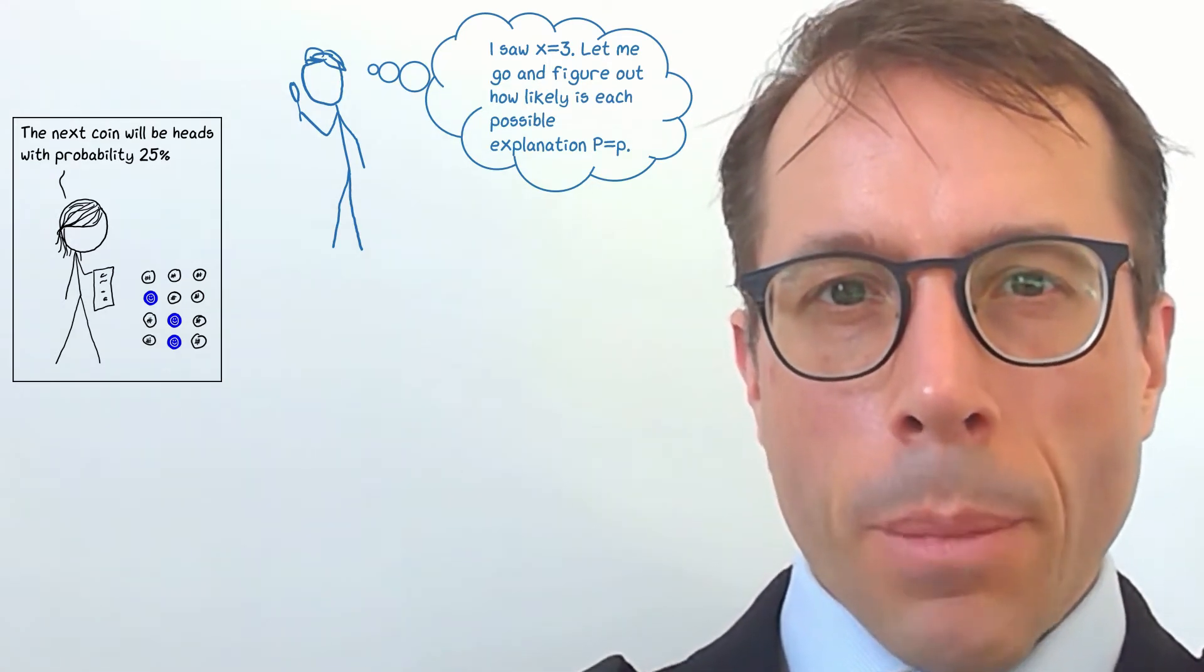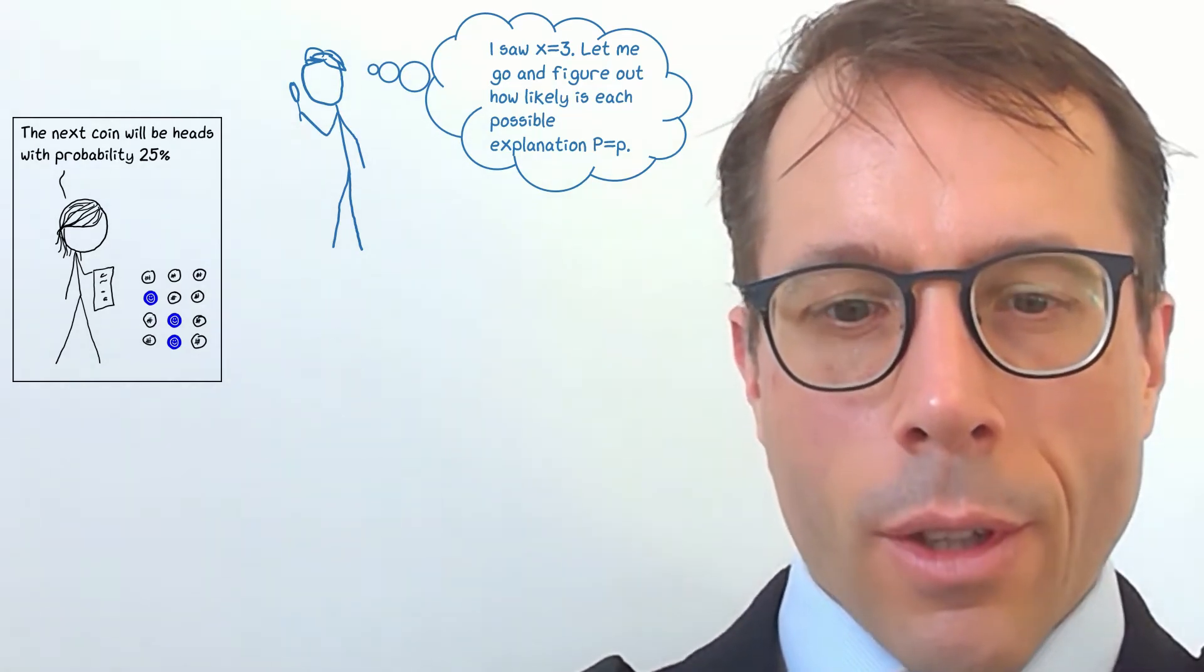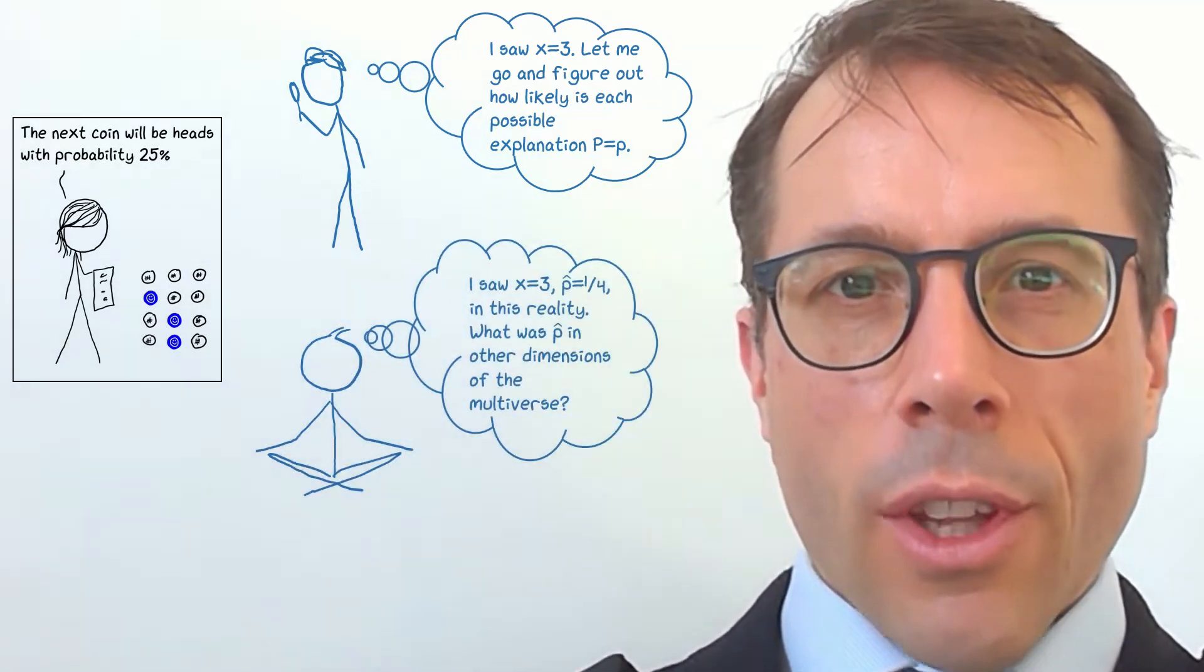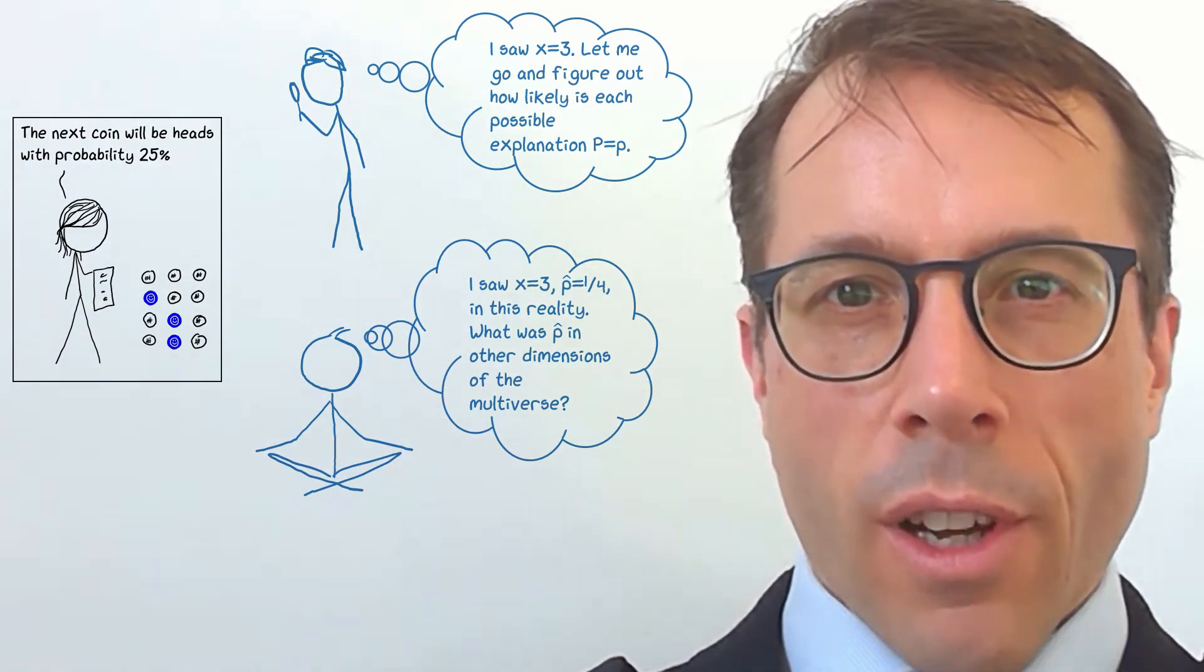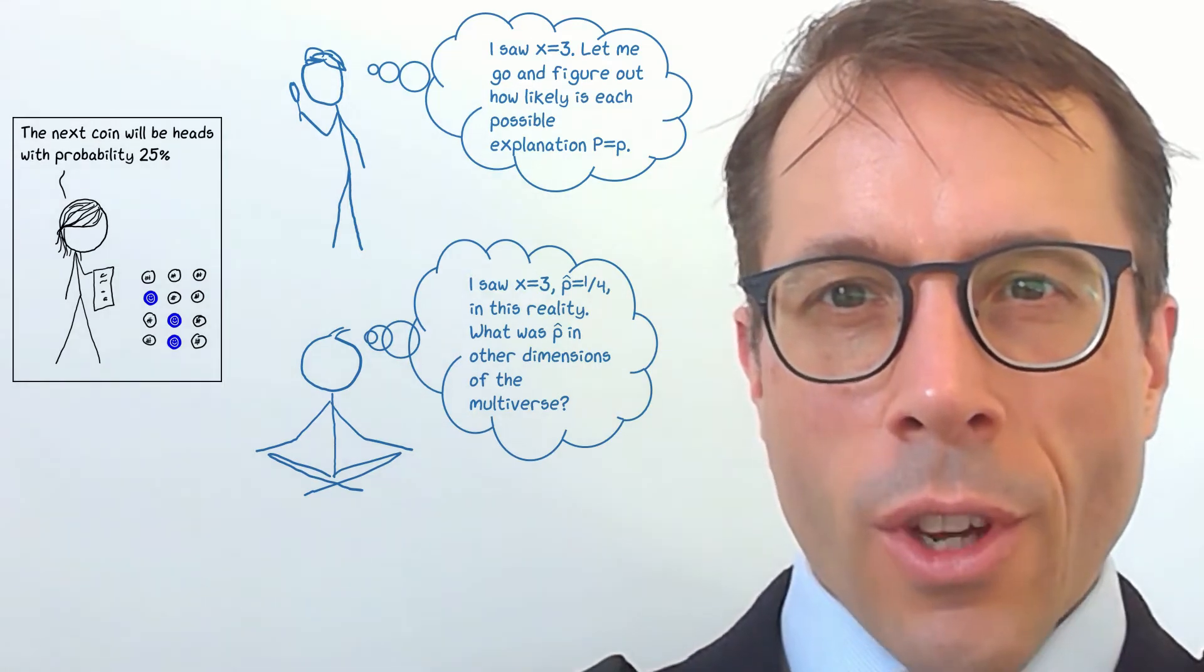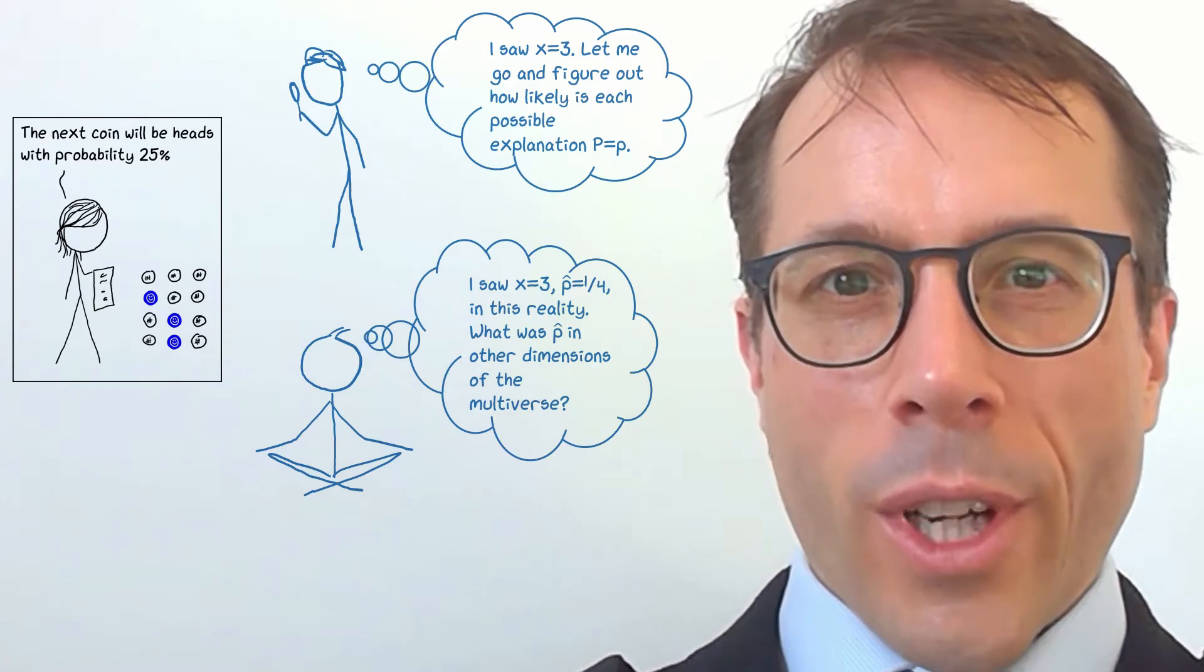But there's another completely different approach, not a detective's approach, a mystic's. The mystic says to themselves, I saw three heads, and concluded p hat equals 25%. But that's just, you know, in this reality. It's just chance, I saw three heads.